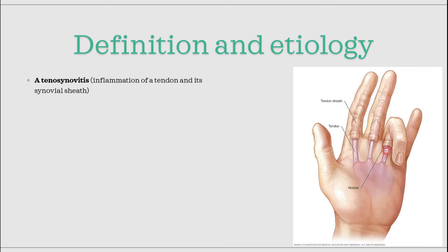The inflammation usually occurs due to excessive stress on that part of the tendon, but it can also be due to other diseases. Patients with diabetes mellitus have a much higher chance of contracting trigger finger, for example.